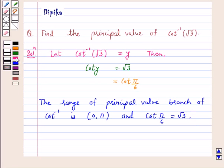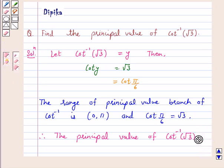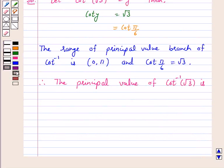Therefore the principal value of cot inverse root 3 is pi by 6, and this is the answer for the above question.